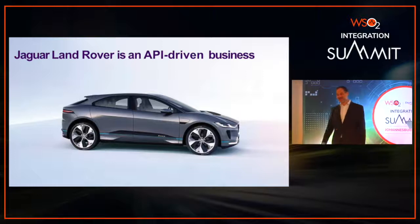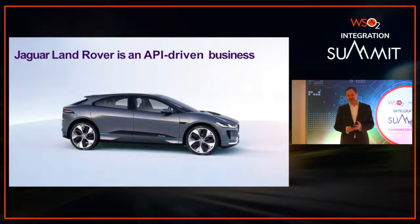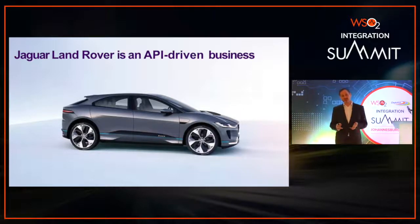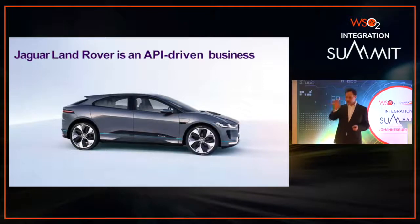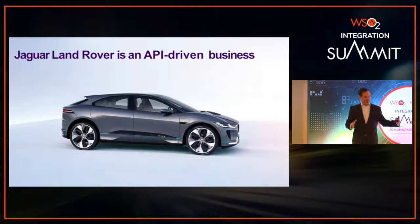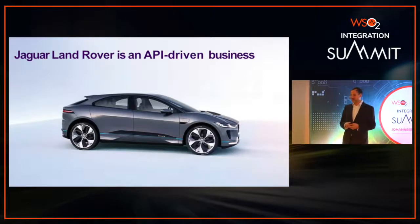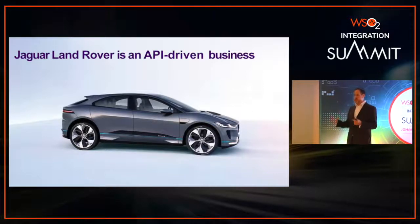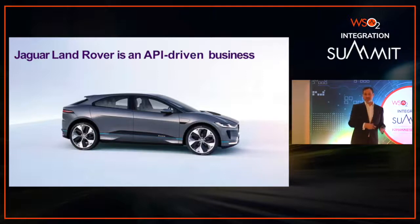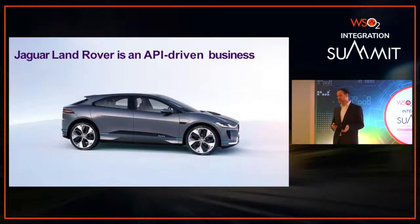Jaguar Land Rover is a WSO2 customer. What they've done is really interesting — they've integrated APIs across the whole lifecycle of the product. They use it at the business end when they sell the car, but also in the manufacturing plant. They've deployed APIs inside every manufacturing plant to automate manufacturing. Then having done both, they realized: if you go into the sales room and configure a car, they can take that directly to the manufacturing plant — you want the Alcantara leather interior and the 10-speaker stereo system, they can automate that the whole way through.